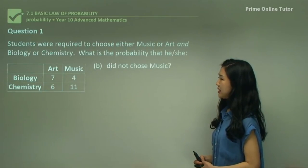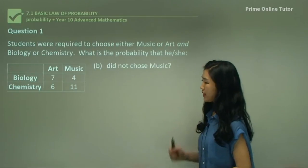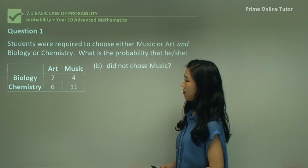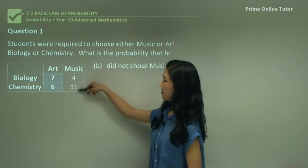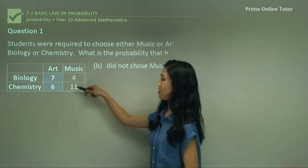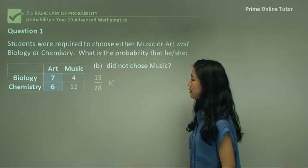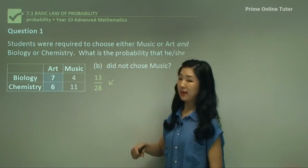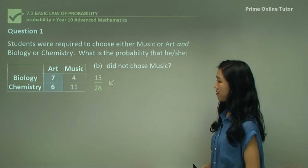Now B — did not choose music. So let's have a look at our table again. Who did not choose music? Only these students, because this column is the column for music, so it must not be these students — it must be any of these students. So 13 out of the 28 students, because 7 plus 6 makes 13. That's how we got that one.